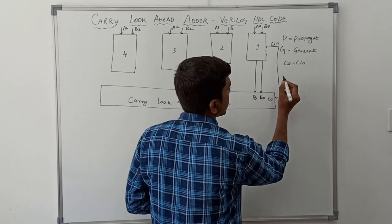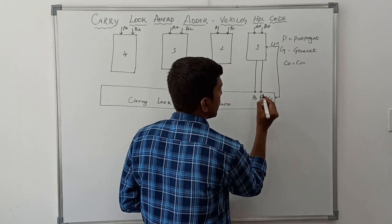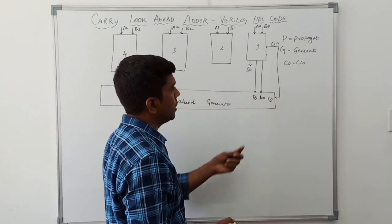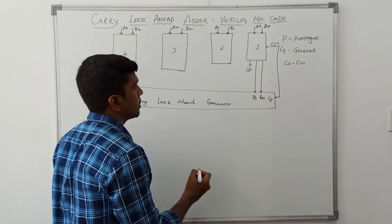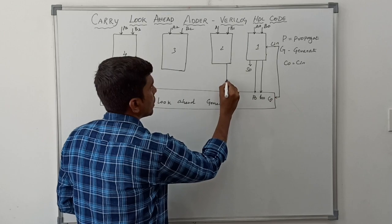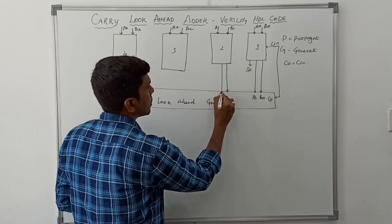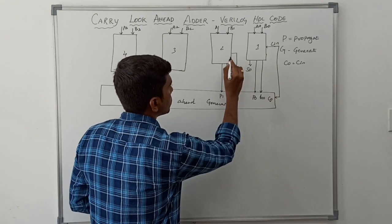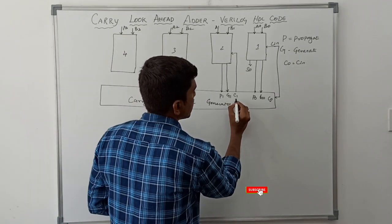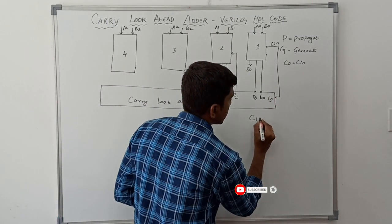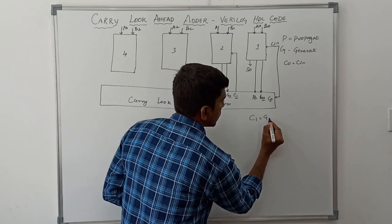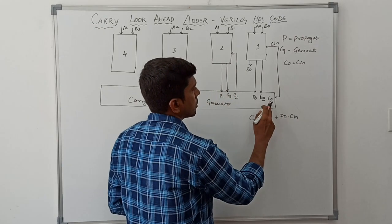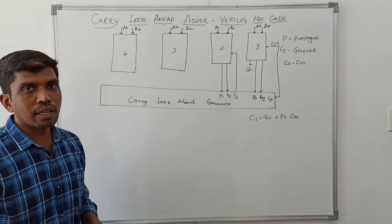The adder circuit generates two outputs: one is sum and another is carry. The carry value is represented as C0, sum as S0. P and G represent propagate and generate. For the second adder circuit, A1 and B1 generate P1 and G1. Carry 1 is applied to the second adder circuit. The equation for carry 1 is: C1 = G0 + P0 · C0.